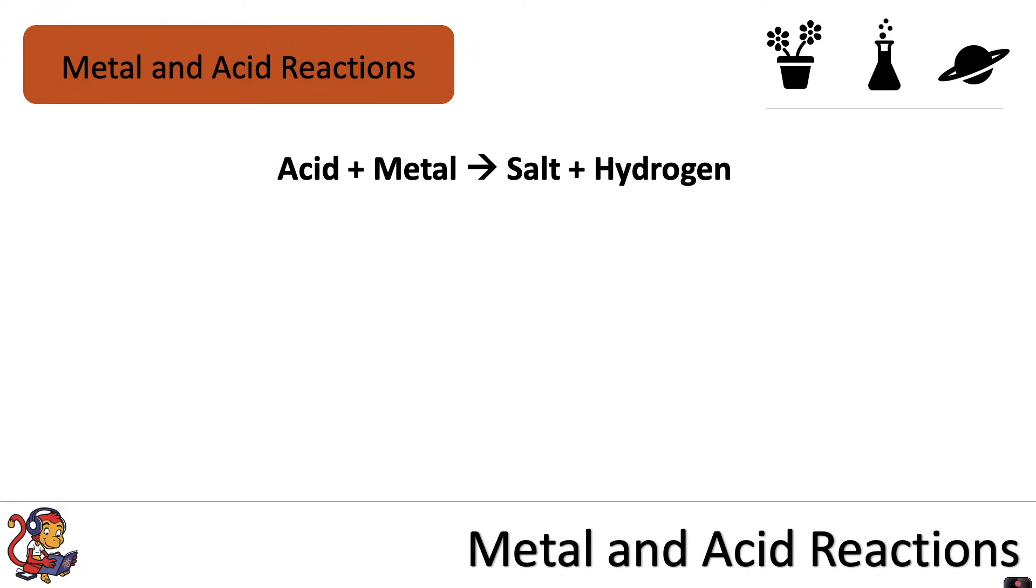When an acid and a metal react, they produce a salt plus hydrogen. So the general equation we use is acid plus metal makes a salt plus hydrogen. Here are some example word equations.